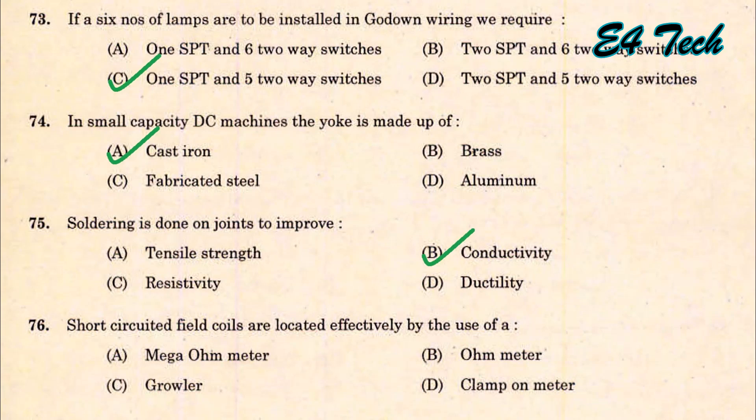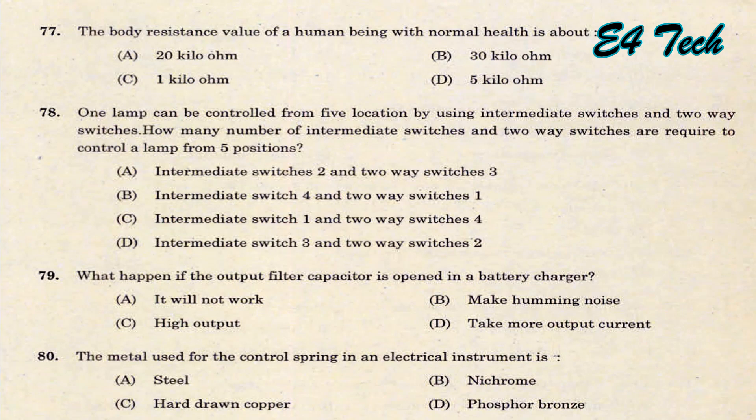Short-circuited field coils are located effectively by the use of a growler. That is option C. The body resistance value of a human being with normal health is about 1 kilo ohm (1000 ohms). That is option C.